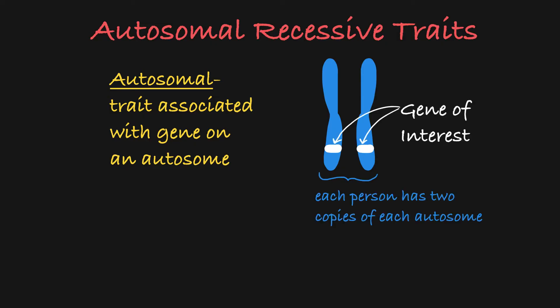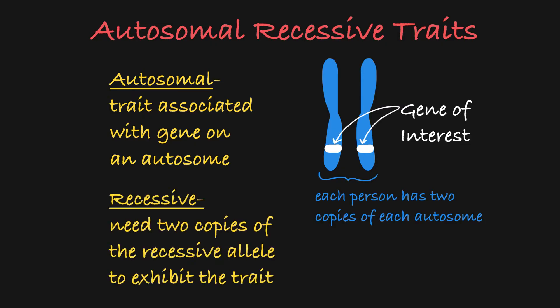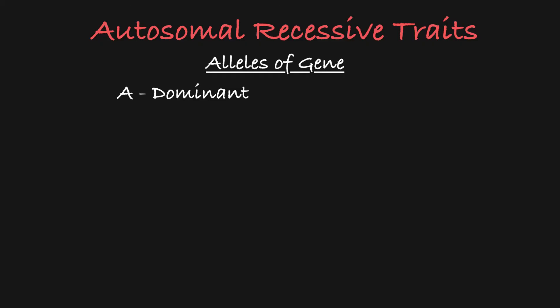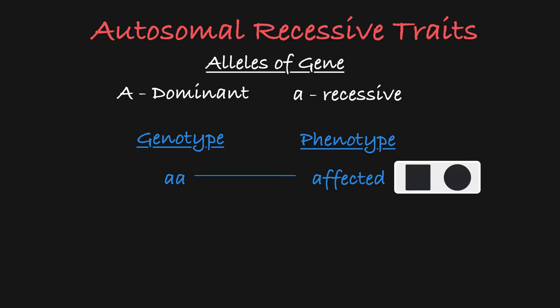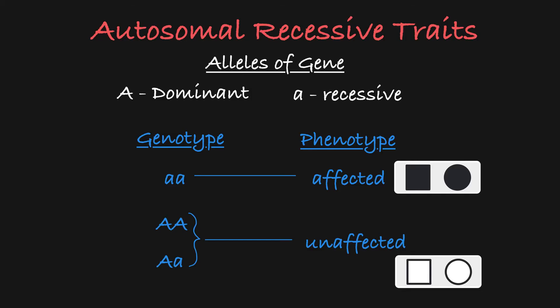The fact that the trait is recessive means that an affected person must be homozygous recessive for the allele associated with the trait. For example, let's say the gene associated with your trait has two alleles — a dominant allele and a recessive allele. When dealing with a trait inherited in an autosomal recessive manner, a person with the homozygous recessive genotype will be affected, and a person will be unaffected if they are homozygous dominant or heterozygous.